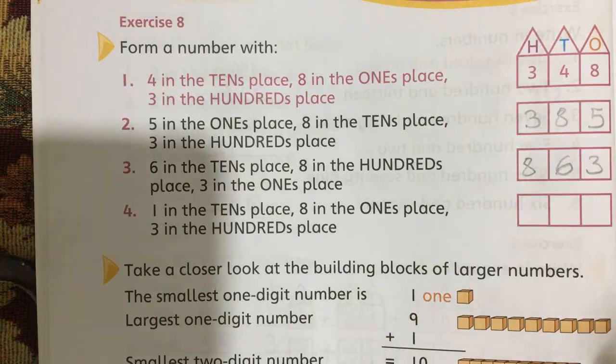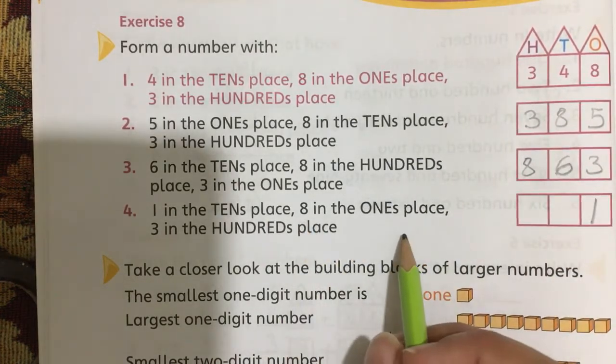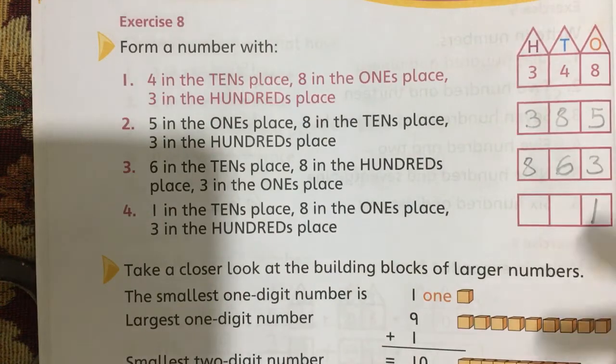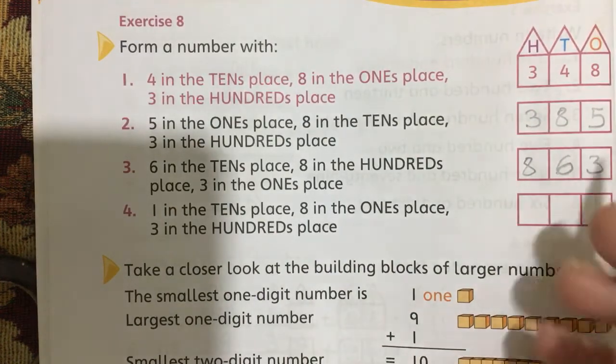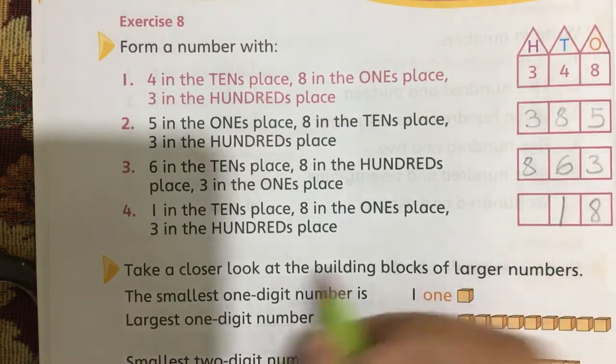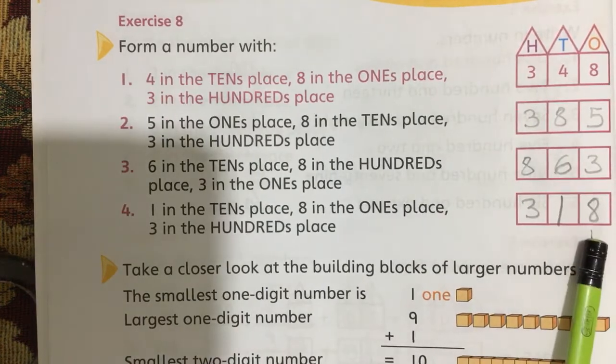1 in the tens place, 1 in the tens place, 8 in the ones place. Oh sorry, 1 in the tens place. This is 1 in the tens place, 8 in the ones place, and 3 in the hundreds place. The number is 318.